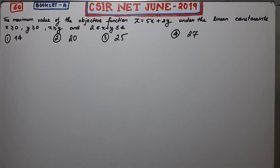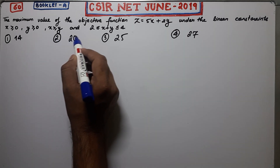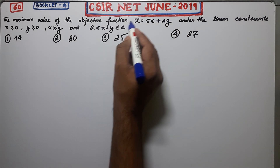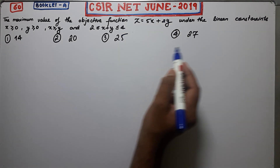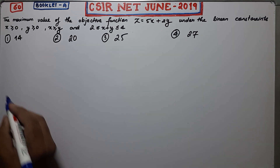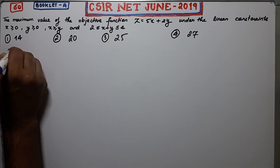Welcome guys. This is question number 60 of Booklet A from CSIN June 2019. This is a very easy question from the topic LPP. Let us firstly read this question. The maximum value of the objective function under the linear constraints — so these are your constraints.